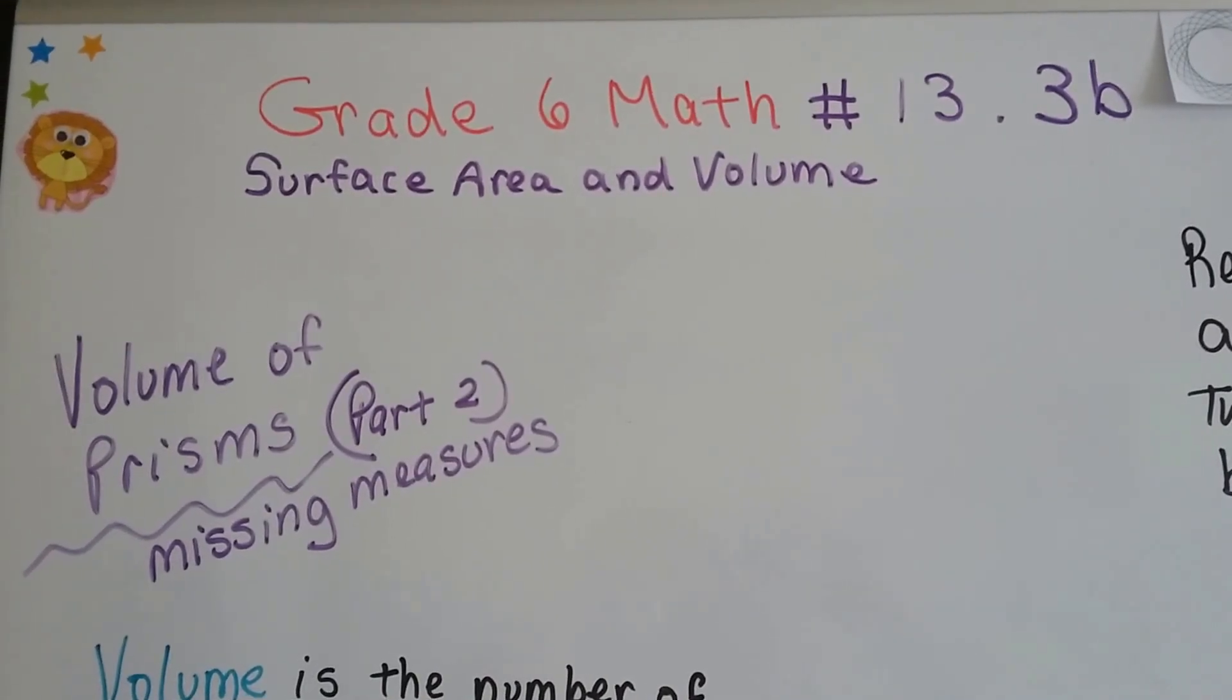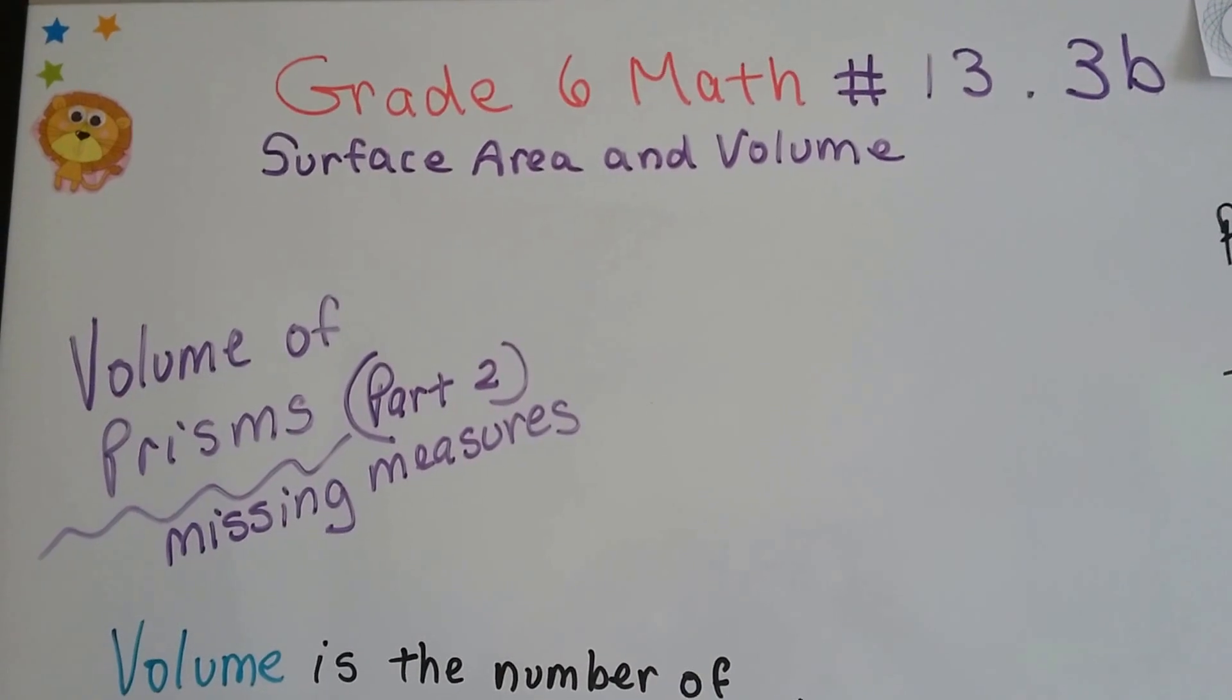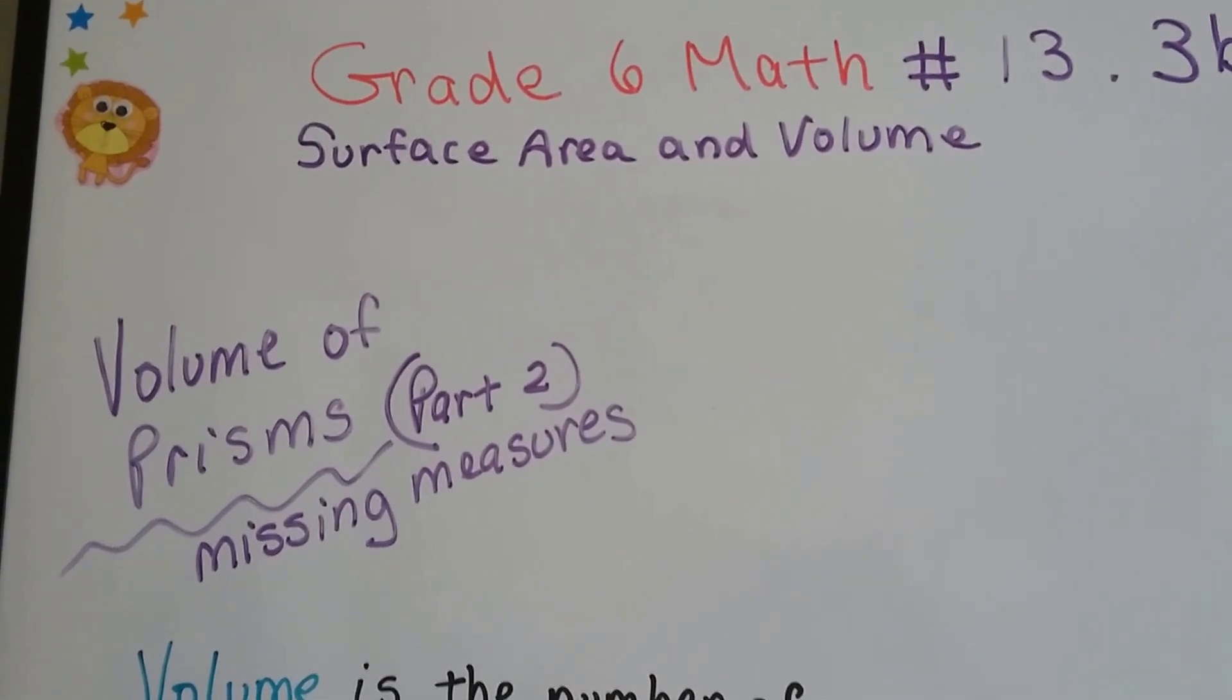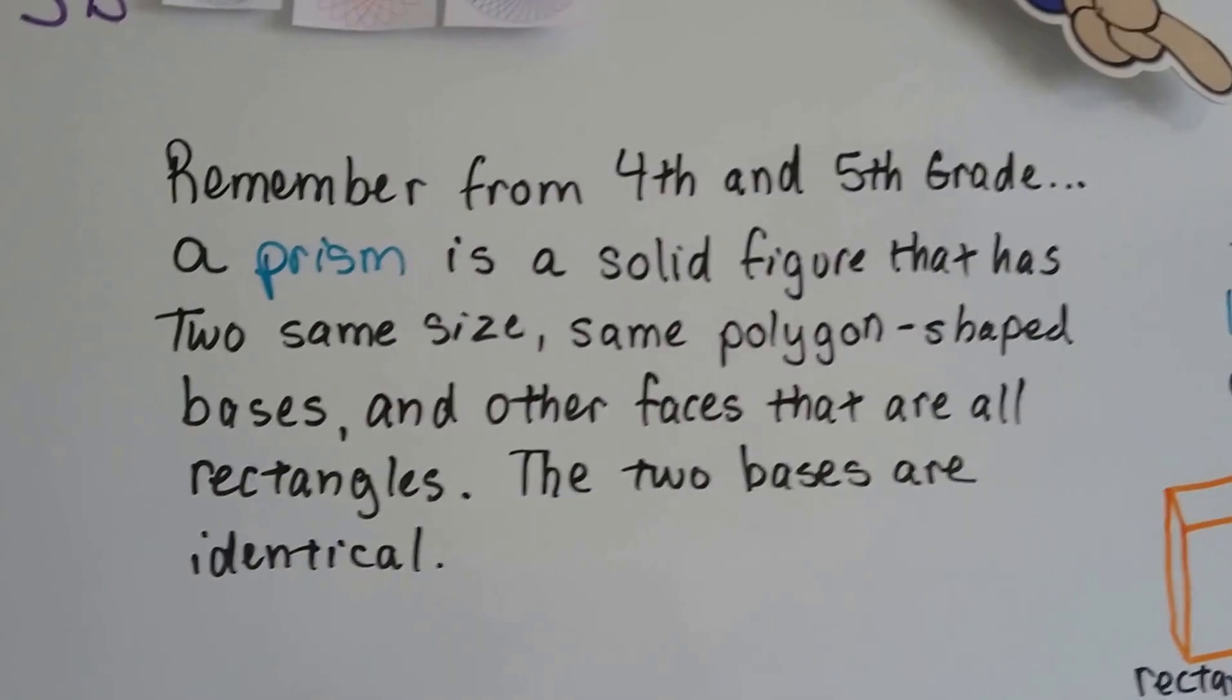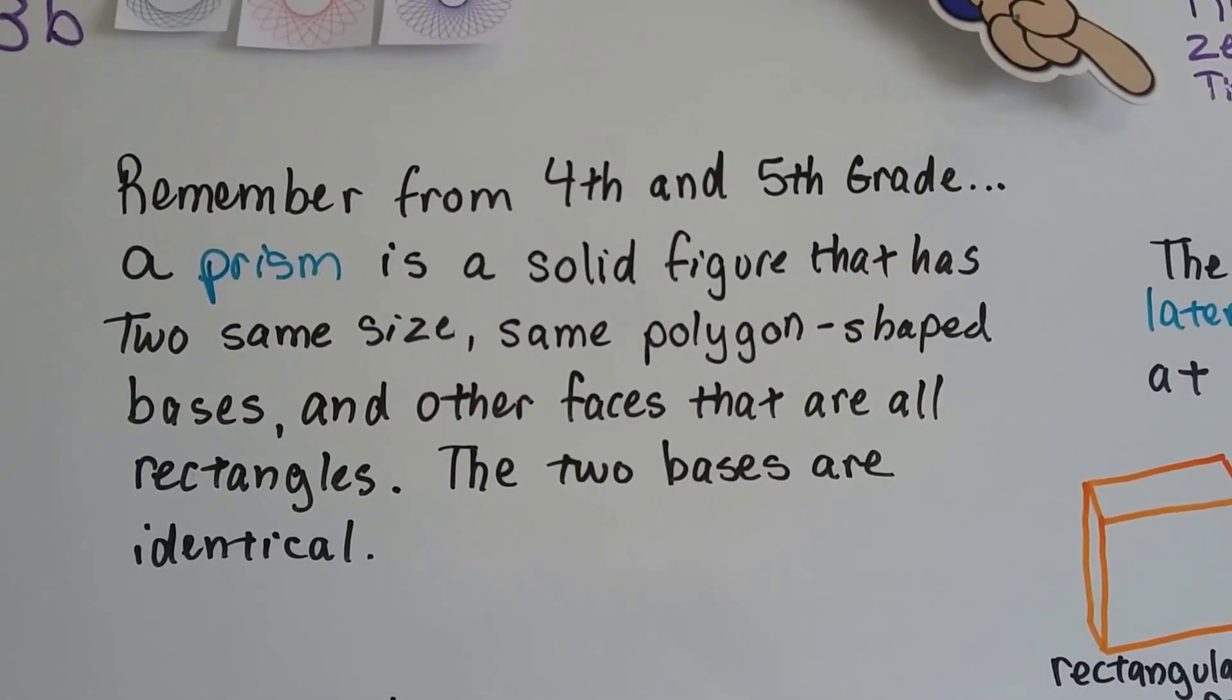Grade 6 math number 13.3b: volume of prisms part 2, missing measures. We were talking about prisms in the last video and how it's a solid figure that has two same size, same polygon shaped bases.